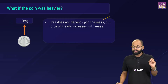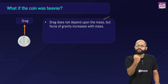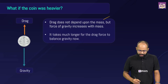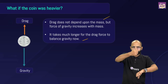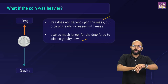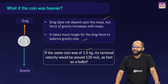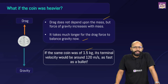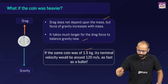What if the coin were heavier? Drag does not depend on mass, but the force of gravity increases with mass — it pulls more. So it takes much longer for drag force to balance gravity. If the same coin had a mass of 1.5 kg, its terminal velocity would be around 120 meters per second — as fast as a bullet — and that would be lethal.